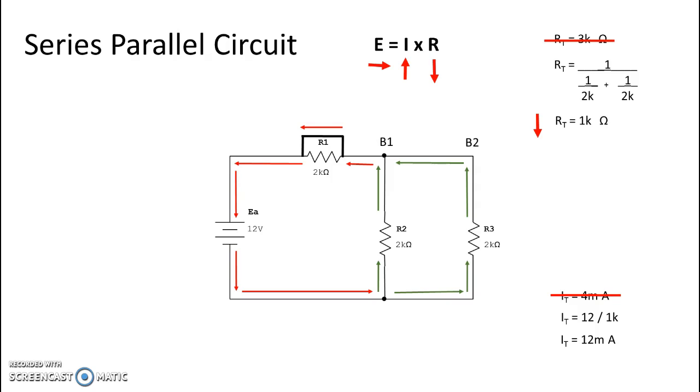We know that each one of our branches will see 12 volts supplied. That original current of 2 milliamps is going to change. We are going to have 12 volts divided by 2k, and we will see 6 milliamps in branch 1.